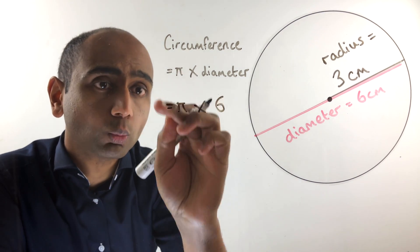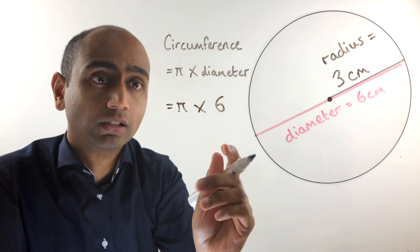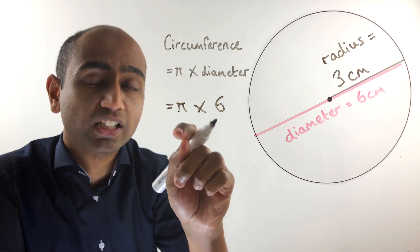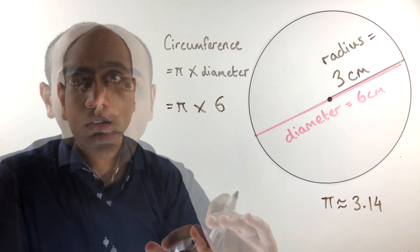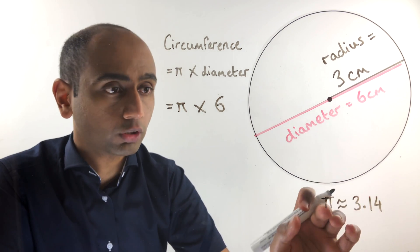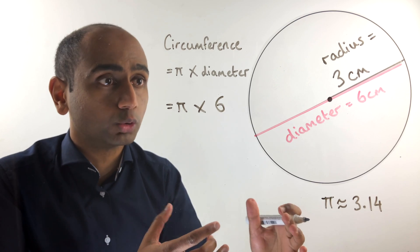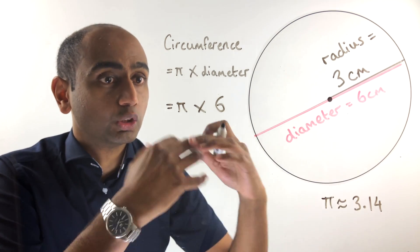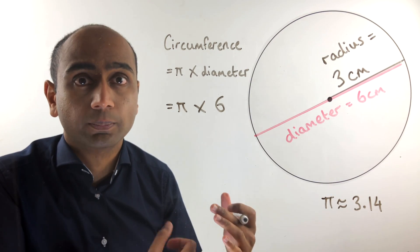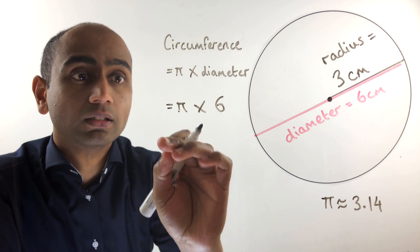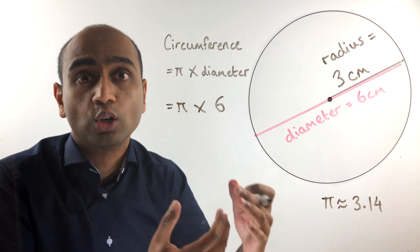So we substitute the diameter six into the formula, giving us pi times six. Pi is the Greek letter that represents a number approximately equal to 3.14. It's not exactly 3.14 — the decimal expansion goes on forever. What this is saying is that for any circle, if you know the diameter you can multiply it by this number to get the circumference. In other words, pi is the ratio between the diameter and the circumference of a circle.